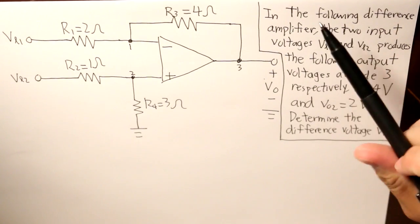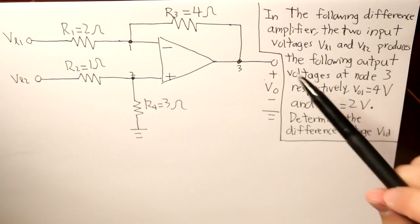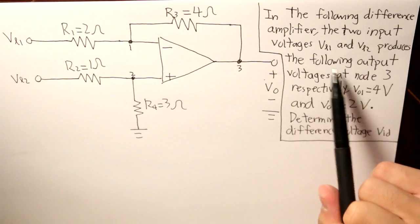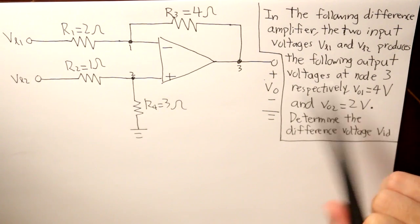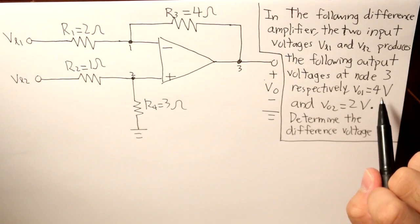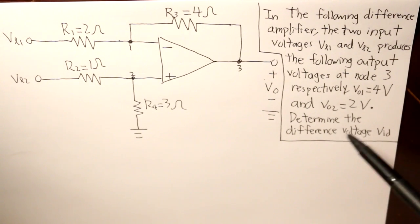So the question is this: in the following difference amplifier, the two input voltages VL1 and VL2 produces the following output voltages at node 3 respectively, V01 as 4 volts and V02 as 2 volts. Determine the difference voltage VID.